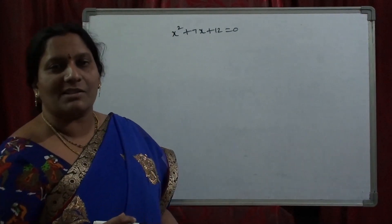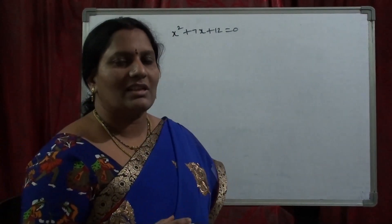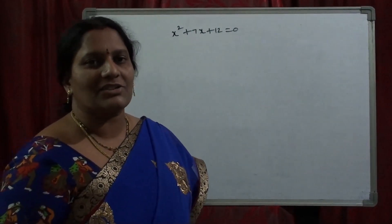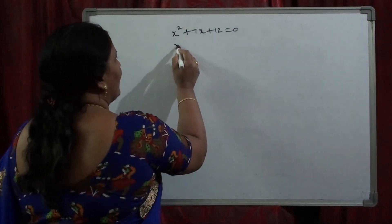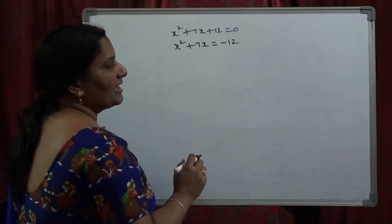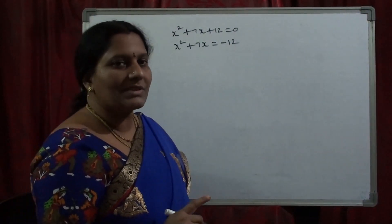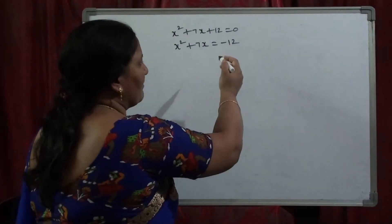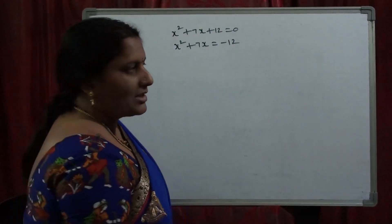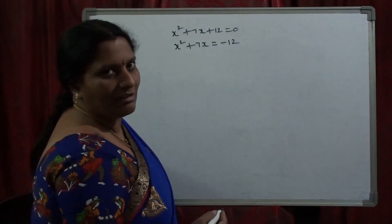Whenever we are applying this rule, first we should change the constant term from LHS to RHS. Send the constant from LHS to RHS. So x² + 7x = −12. Whenever we send +12 from LHS to RHS, it becomes −12. That is 0 − 12, which is nothing but −12. Observe: LHS is x² + 7x and RHS is −12.